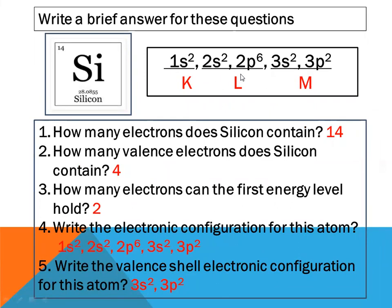The K shell holds 1s2. The L shell splits into 2s and 2p subshells: 2s holds maximum 2, 2p holds maximum 6. So 1s2 2s2 2p6 fills the first two shells, accommodating 10 electrons. The remaining 4 electrons go to the M shell: 3s2 and 3p2. So silicon has 14 electrons total; valence electrons are 4 (3s2 3p2); the first energy level holds 2 electrons. The complete configuration is 1s2 2s2 2p6 3s2 3p2, and the valence shell configuration is 3s2 3p2.